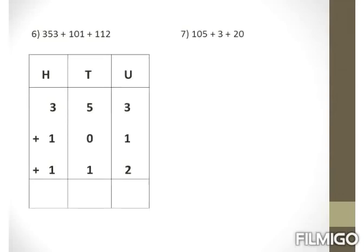Example 6: 353 plus 101 plus 112. Now we have the addition of 3 numbers. Write the numbers as per their places. In units place we have 3, 1, and 2: 3 plus 1 makes 4, and 4 plus 2 makes 6. In tens place: 5 plus 0 is 5, and 5 plus 1 is 6. In hundreds place: 3 plus 1 is 4, and 4 plus 1 is 5. So our answer is 566.